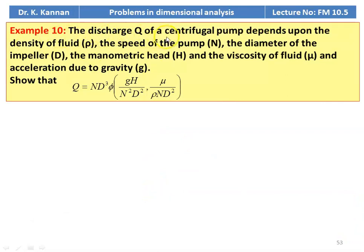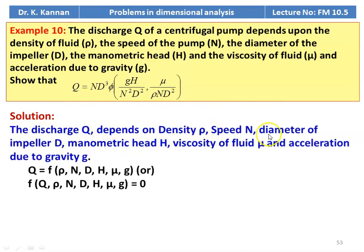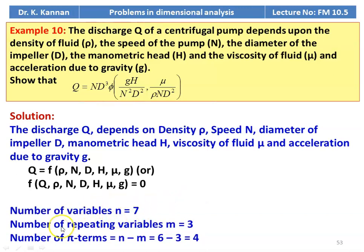Example number 10: The discharge q of a centrifugal pump depends upon the density of the fluid rho, speed of the pump n, diameter of the impeller d, manometric head h, viscosity of the fluid mu, and acceleration due to gravity g. We write q = f(rho, n, d, h, mu, g). There are 7 variables, 3 repeating variables, giving 4 pi terms.